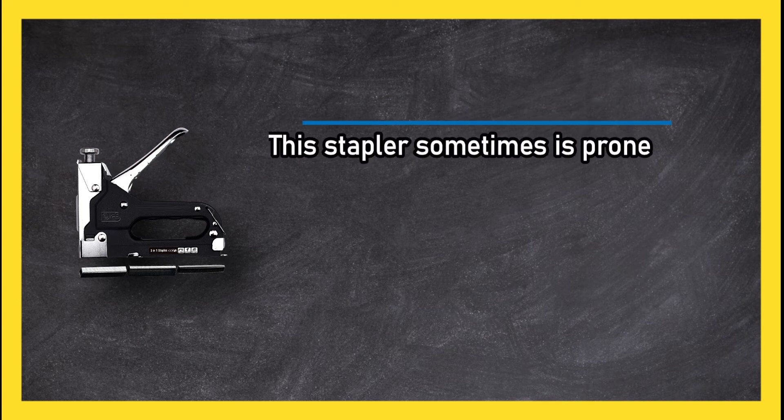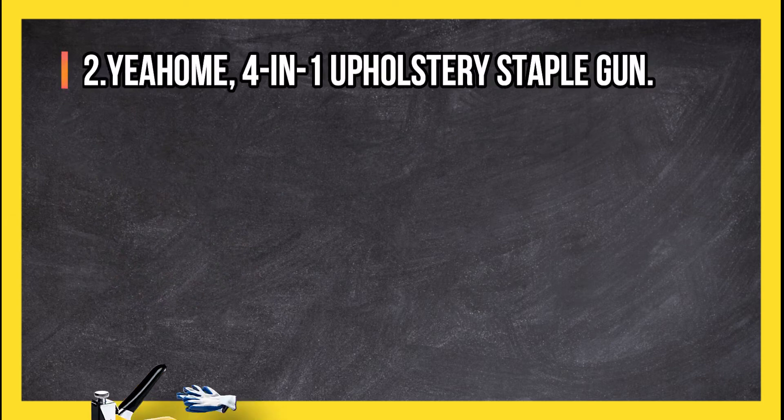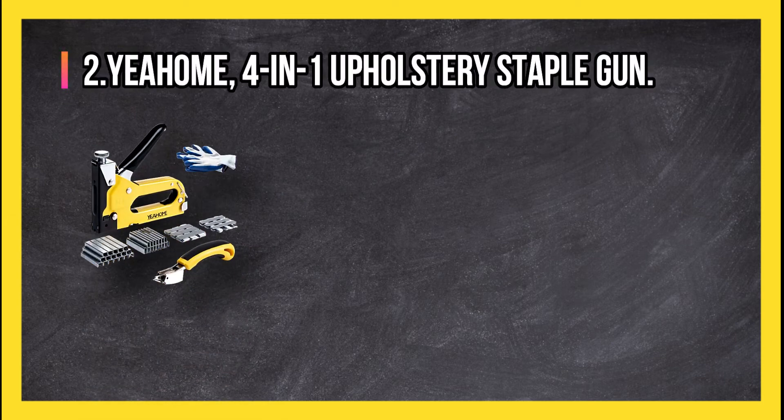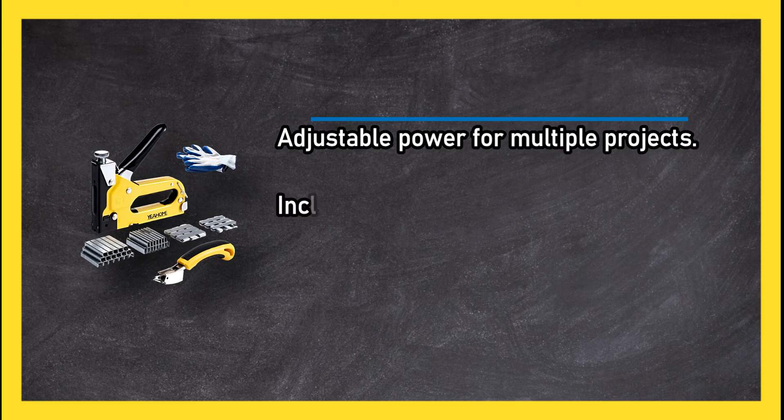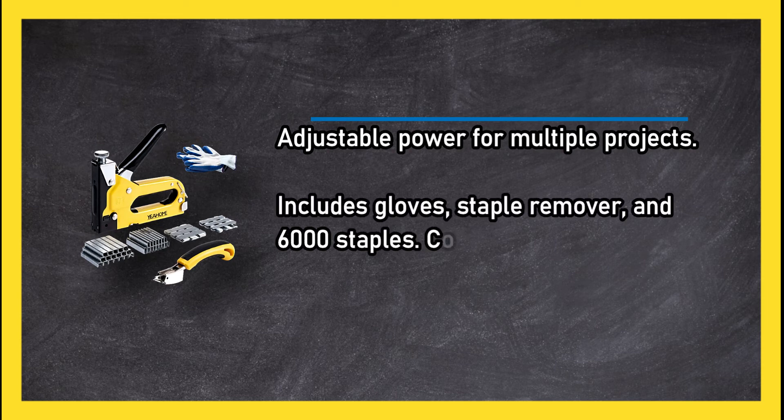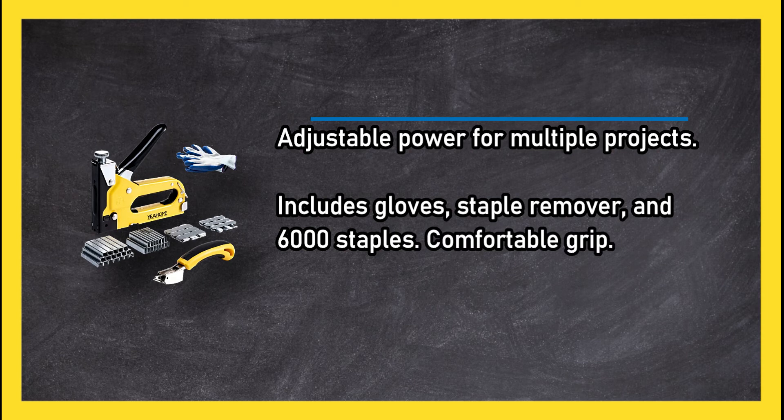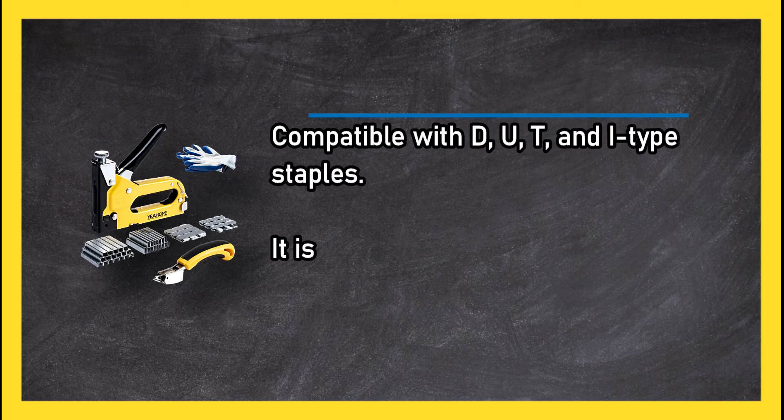At number 2: YEOM 4-in-1 Upholstery Staple Gun. Adjustable power for multiple projects, includes gloves, staple remover, and 6000 staples. Comfortable grip, compatible with D, U, T, and I type staples. It is strong enough to staple upholstery and furniture. Some users found this model difficult to grip.